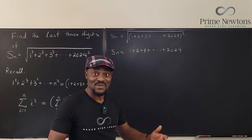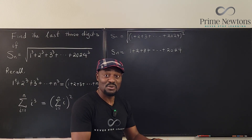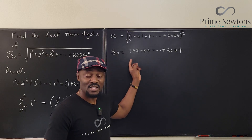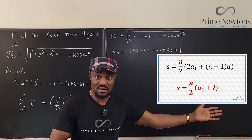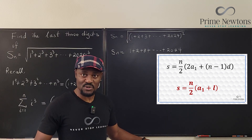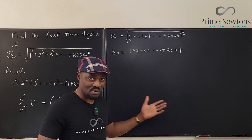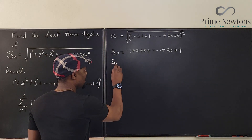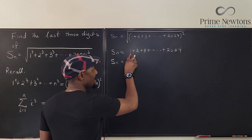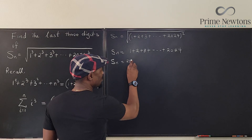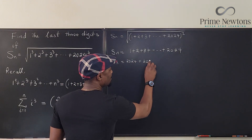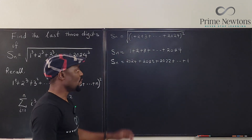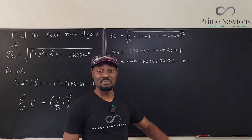You can use the formula for the sum of an arithmetic progression — first term 1, common difference 1, last term 2024, number of terms 2024. But instead of using the formula directly, let's do what Gauss did when he came up with it. Let S_n = 1 + 2 + 3 + ... + 2024. We can also write S_n = 2024 + 2023 + 2022 + ... + 1, adding from big to small instead of small to big.